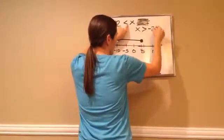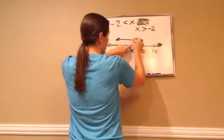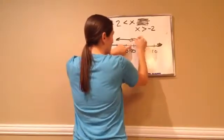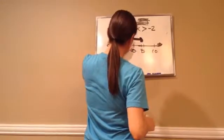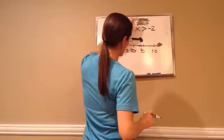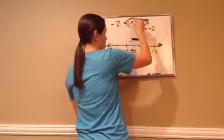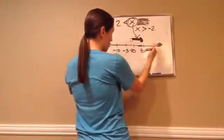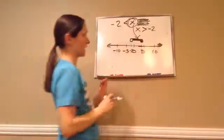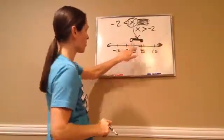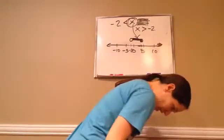x is greater than negative 2. So I go over here and find negative 2. It's greater than that, but it's not equal to, so I'm just going to leave an open hole, and it's going in this direction. So I'm going to erase this part and open up that circle because it said x is less than and equal to 4, but x is greater than negative 2, so it's not equal to negative 2. What you have is x greater than negative 2, less than 4, and equal to 4. From negative 2 to positive 4 would be our line.